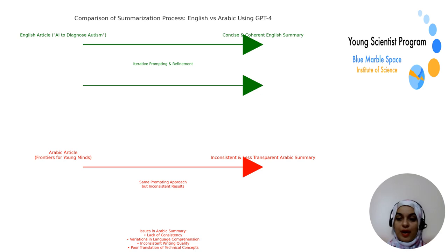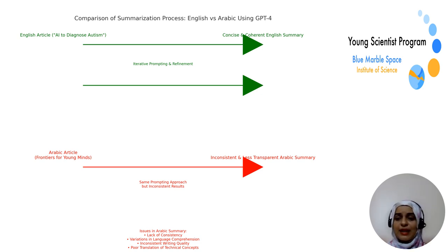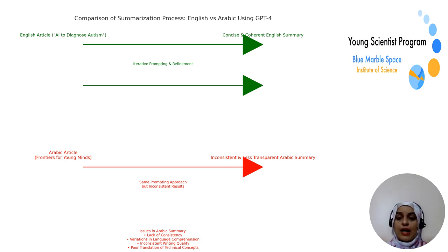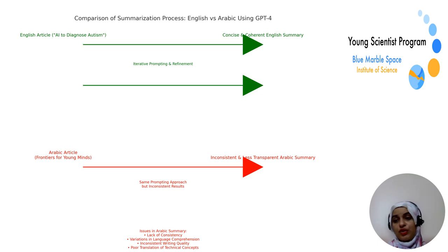However, when I applied the same approach to an Arabic article from Frontiers for Young Minds, the results were far less consistent. Despite using the same model and prompt engineering techniques, the Arabic summary exhibited several issues. It lacked consistency in conveying the original message, showing variations in language comprehension. The quality of writing was inconsistent, and the model struggled with translating technical concepts clearly, leading to a summary that was less transparent and harder to understand.